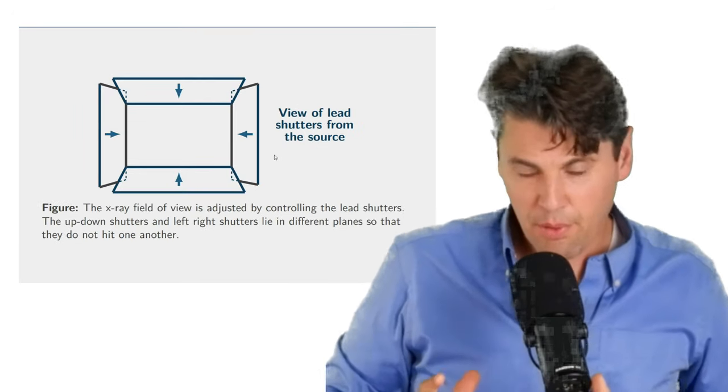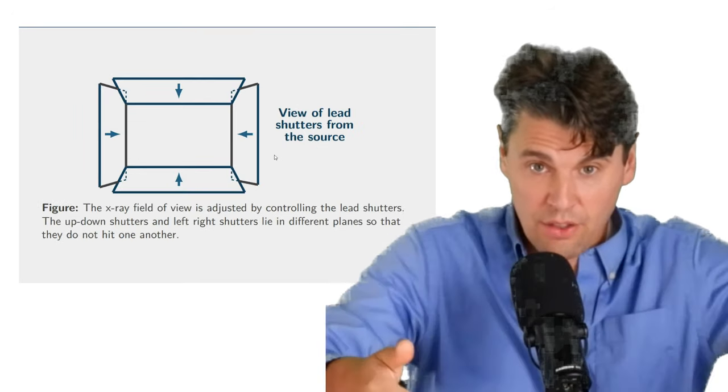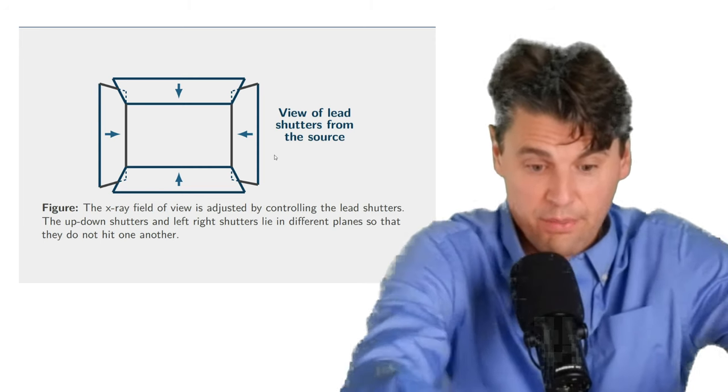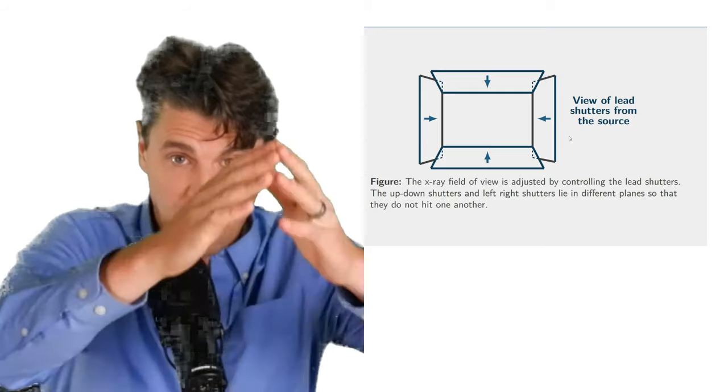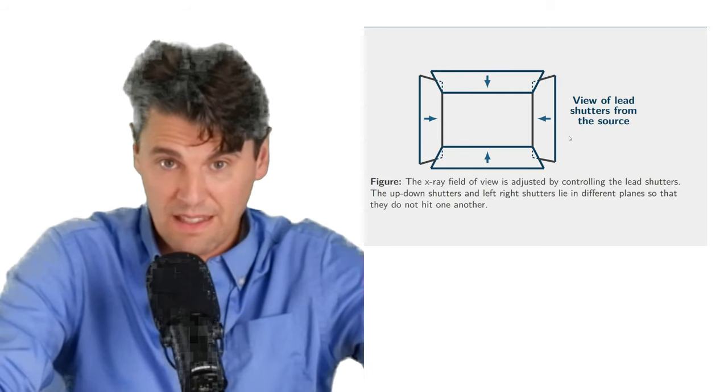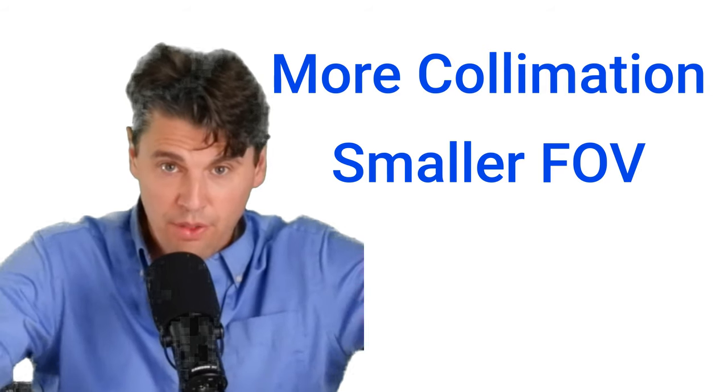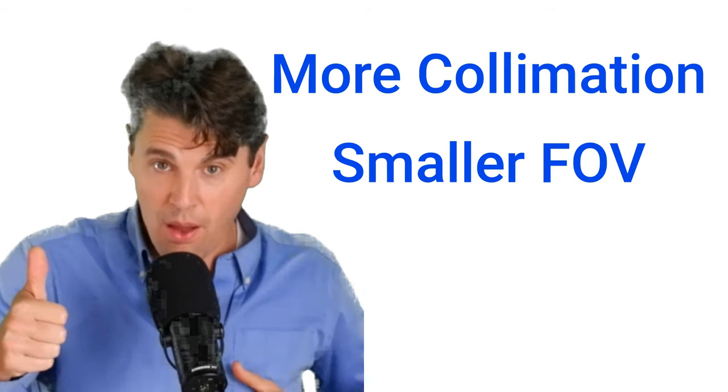If you look at it from the perspective of the x-ray tube, you're actually going to have lead shutters that are coming in from this direction and from this direction. So as the x-rays come down, you're actually defining a rectangular region.